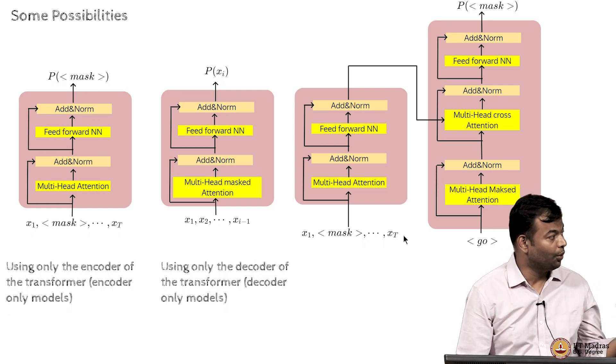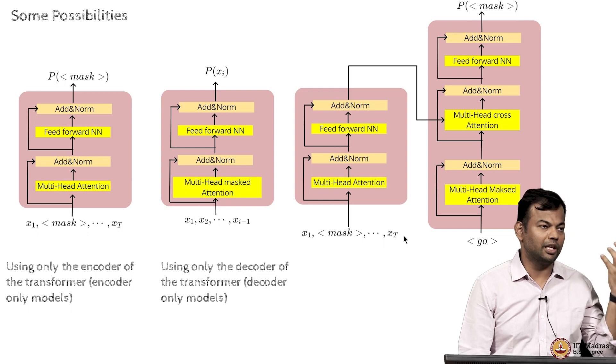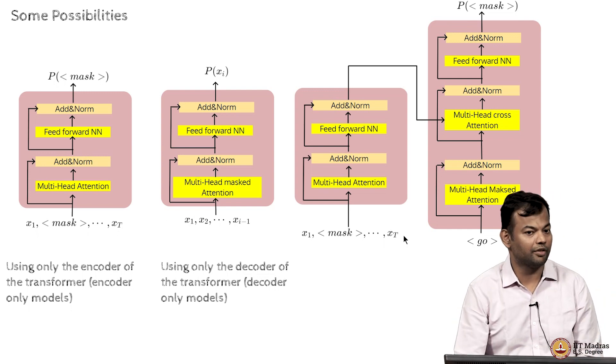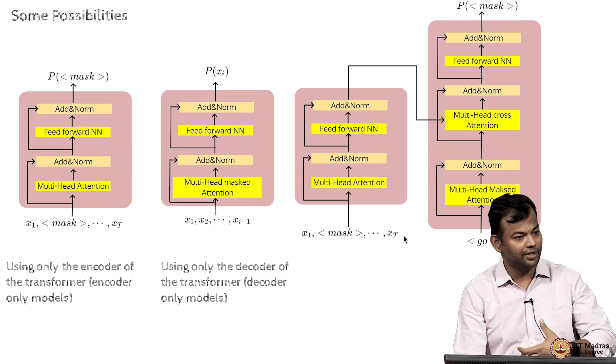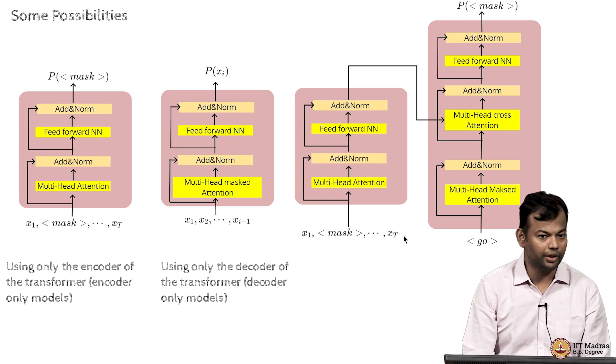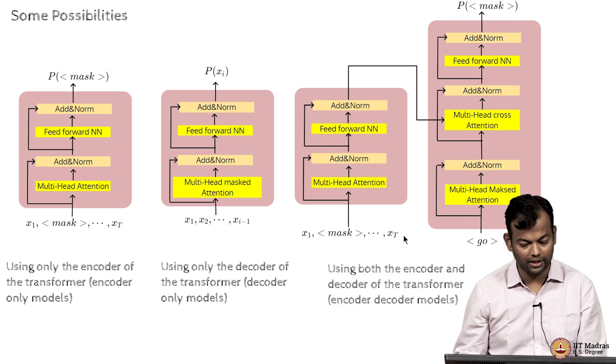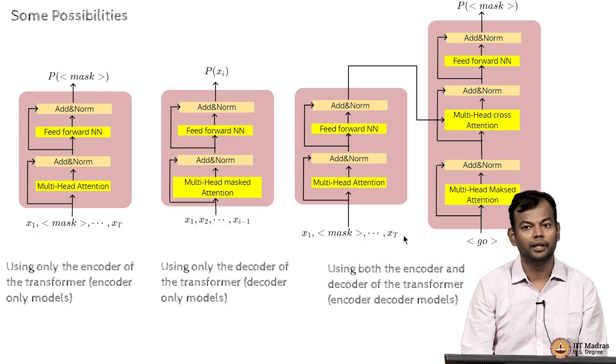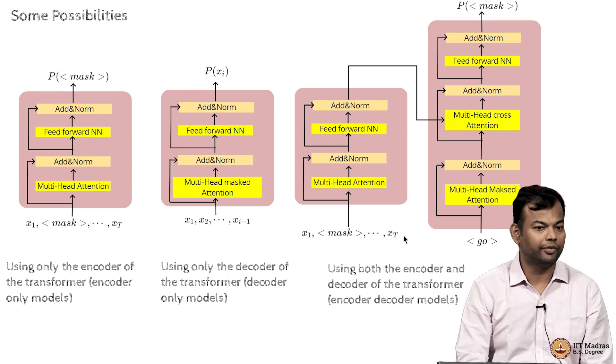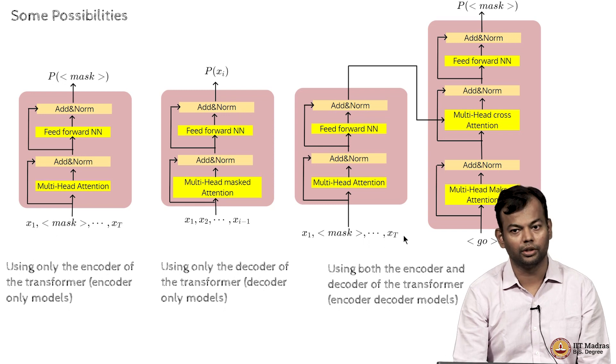One is using only the encoder part of the transformer. So this is the transformer model which we had studied in the context of machine translation which had encoder as well as decoder, but now we are toying with the idea of maybe we can just use the encoder or just use the decoder or use both the encoder and decoder to estimate these probabilities. And this picture will, as I had mentioned in the last class, guide the rest of the discussion in this course.